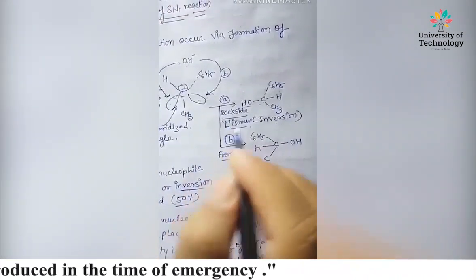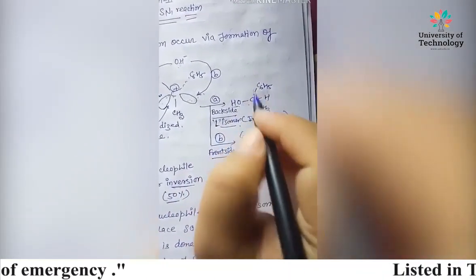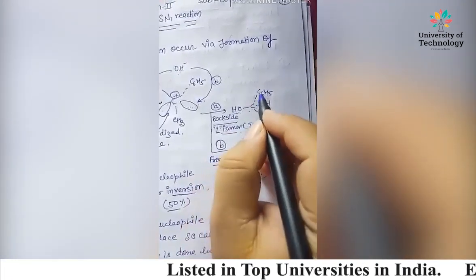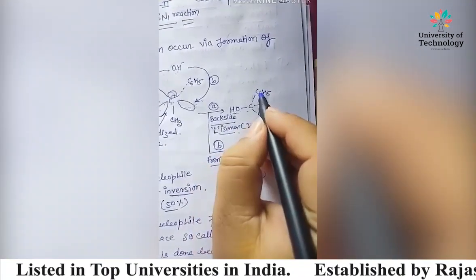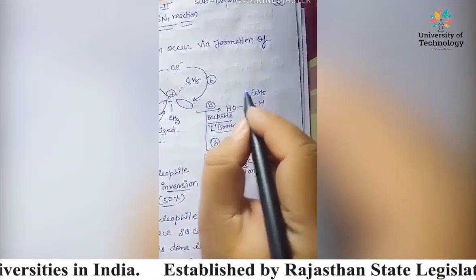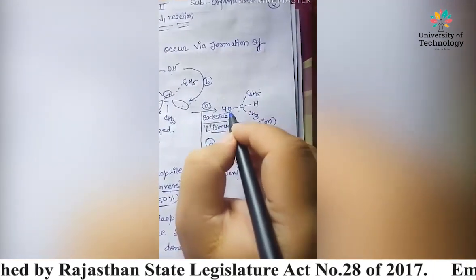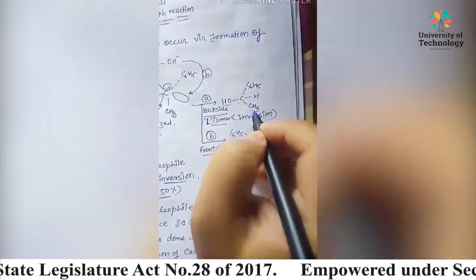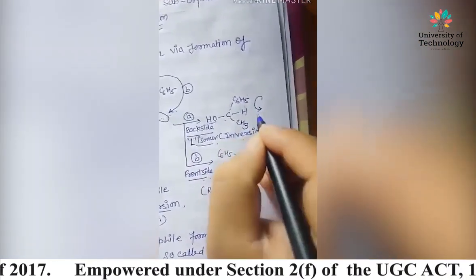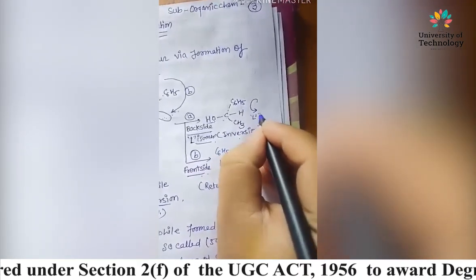The L-isomer is formed when rotation is in an anti-clockwise direction, which is called the L-isomer. Here we see the sequence rule applied with C6H5, molecular weight, hydroxide, and CH3. This is the L-isomer.